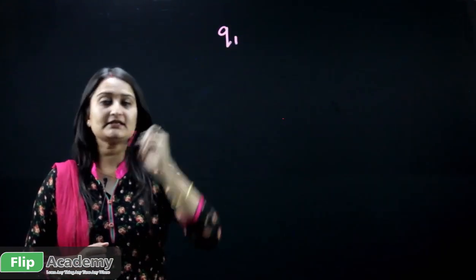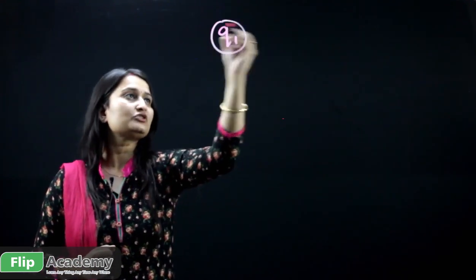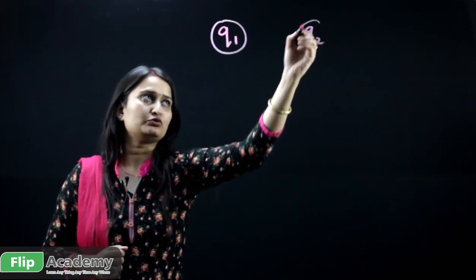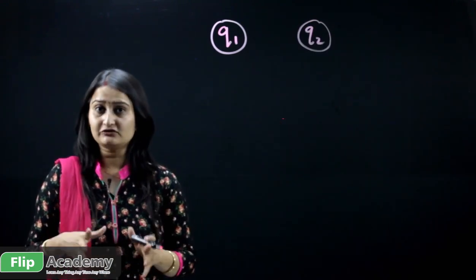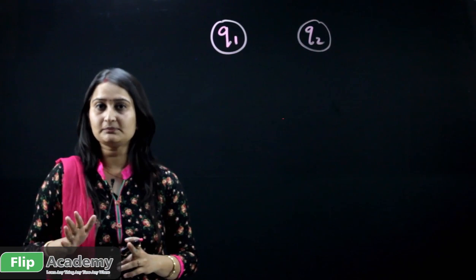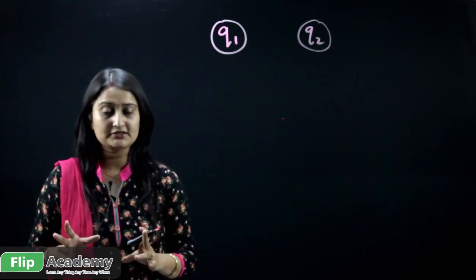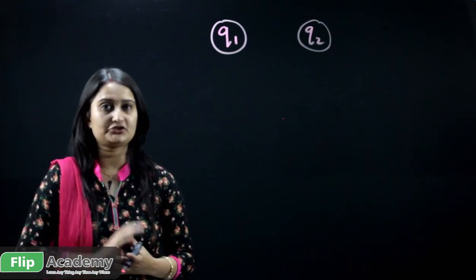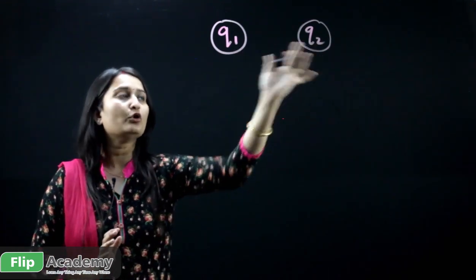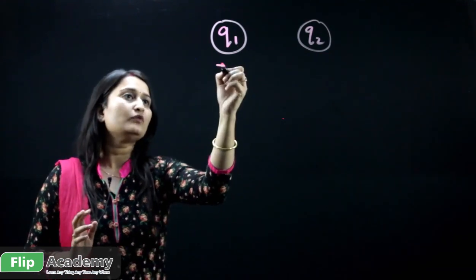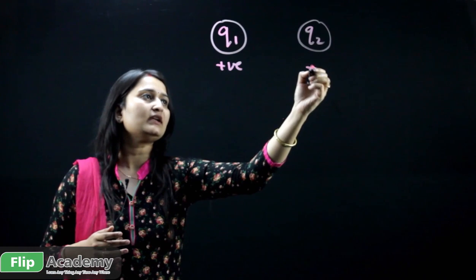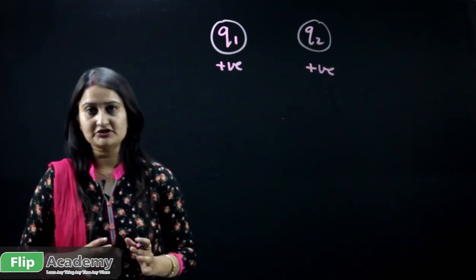We are going to take two charges, Q1 and Q2. We all know that electric charges have two different properties. The first property is that like charges repel each other and unlike charges attract each other. We are going to take the first case, where they both are of the same polarity — Q1 is positive and Q2 is also positive.